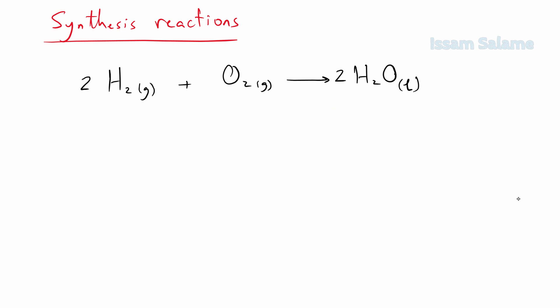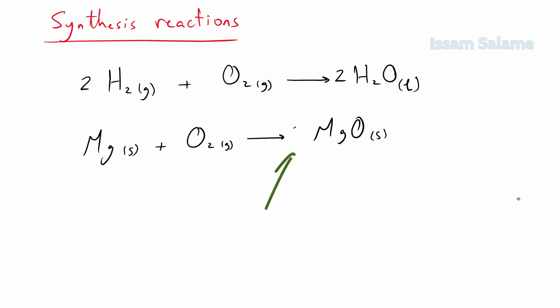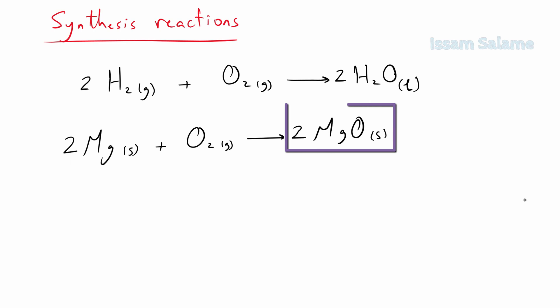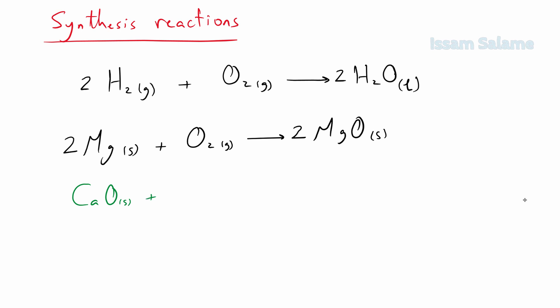Another example: the reaction of magnesium with oxygen gas to produce magnesium oxide. To balance, we multiply magnesium oxide by two and magnesium by two. This is also a synthesis reaction since we have only one product.